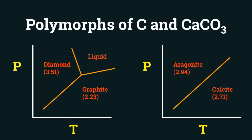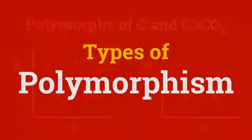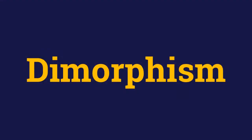This is evident from the pressure-temperature graphs of carbon and CaCO3. As they are formed under different conditions, the resulting structures are not the same. These polymorphs can be classified according to the number of distinct crystalline forms they may have. When a mineral exists in two different crystalline structures, then this phenomenon is called dimorphism.